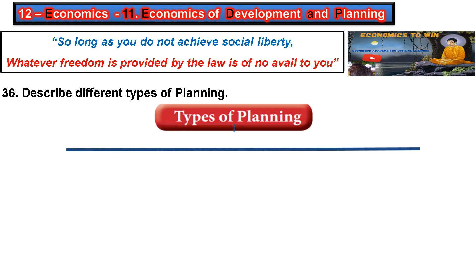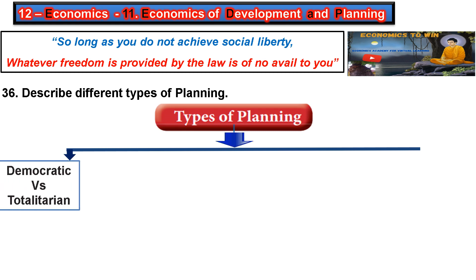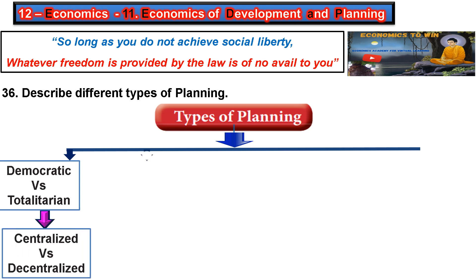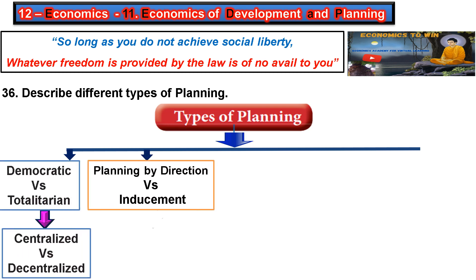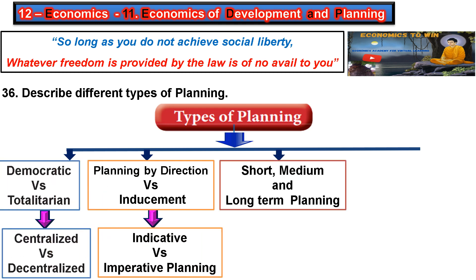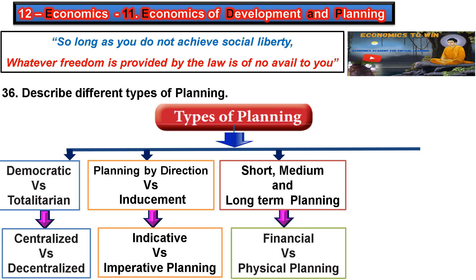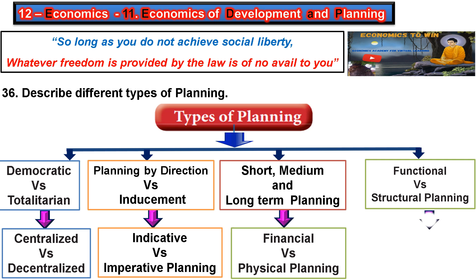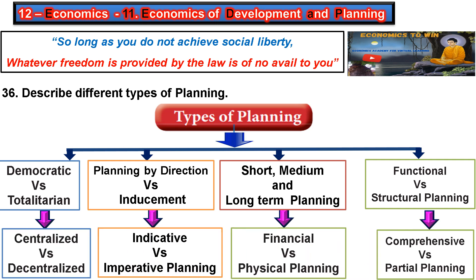Types of planning: there are eight types. First, democratic versus totalitarian. Then centralized versus decentralized. Then planning by direction versus inducement. Then indicative versus imperative planning. Then short term, medium term, and long term planning. Then financial versus physical planning. Then functional versus structural planning. Then comprehensive versus partial planning.